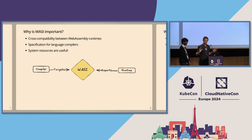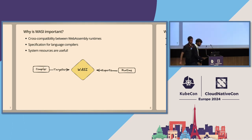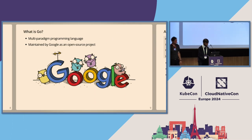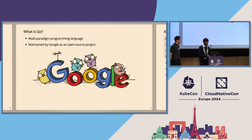Now that we have a sense of what WASI is and why we need it, let's talk about Go. Go is a statically typed, compiled, garbage-collected language. Development started in 2007 at Google and it was publicly released in 2009.